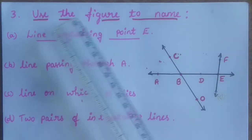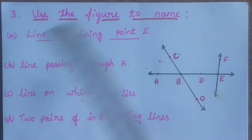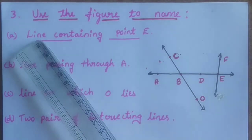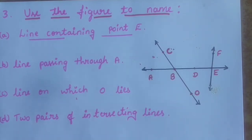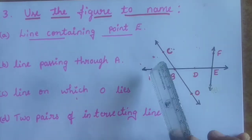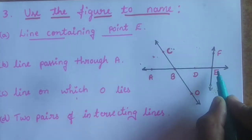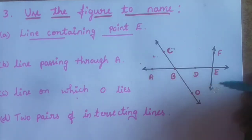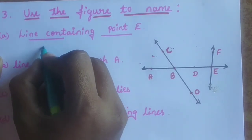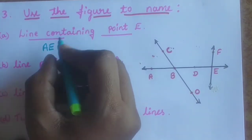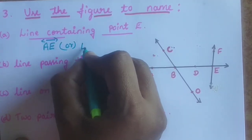Third question: use the figure to name. For this figure we have to name them. First: the line containing point E. We will make one line containing E — that is we can take AE line or EF line.